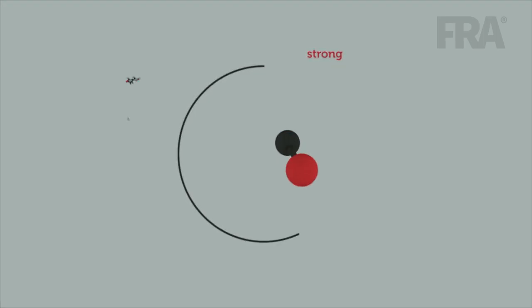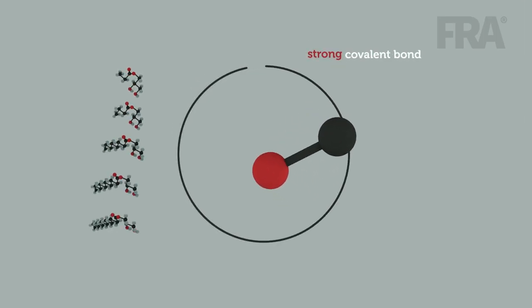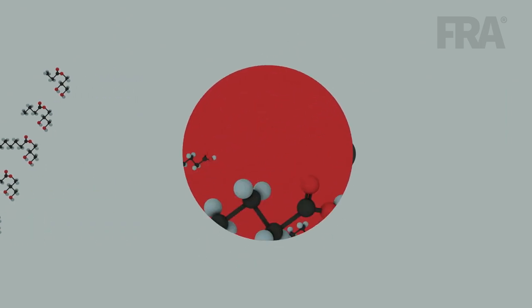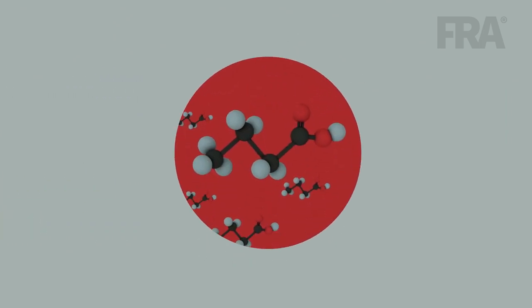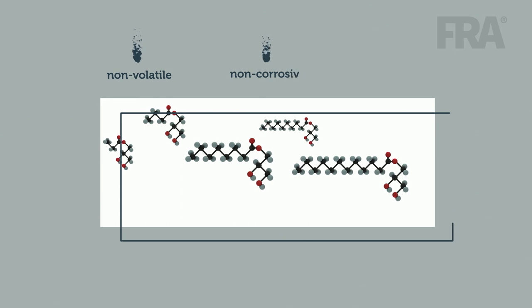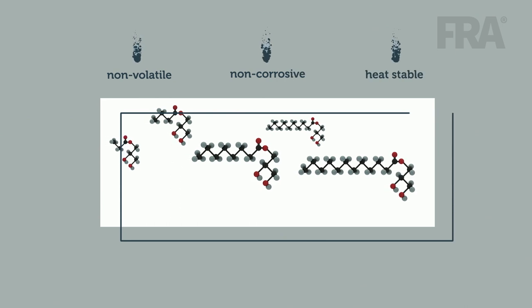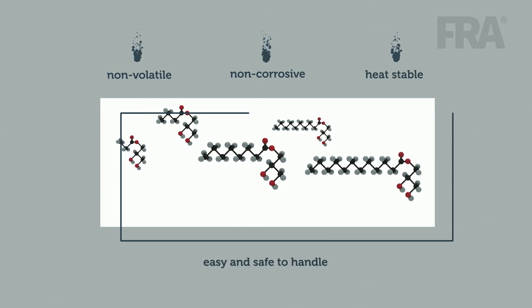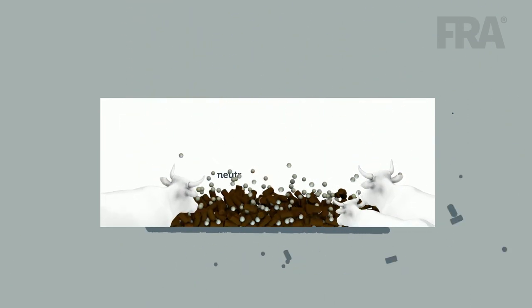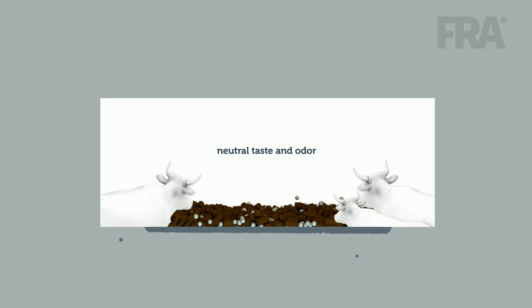The strong covalent bond of alpha-monoglycerides results in multiple benefits compared to free fatty acids. Alpha-monoglycerides are pH-independent and consequently do not dissociate. They are non-volatile, non-corrosive, and heat-stable during feed processing, which makes them easy and safe to handle. Furthermore, alpha-monoglycerides have a neutral taste and odor.